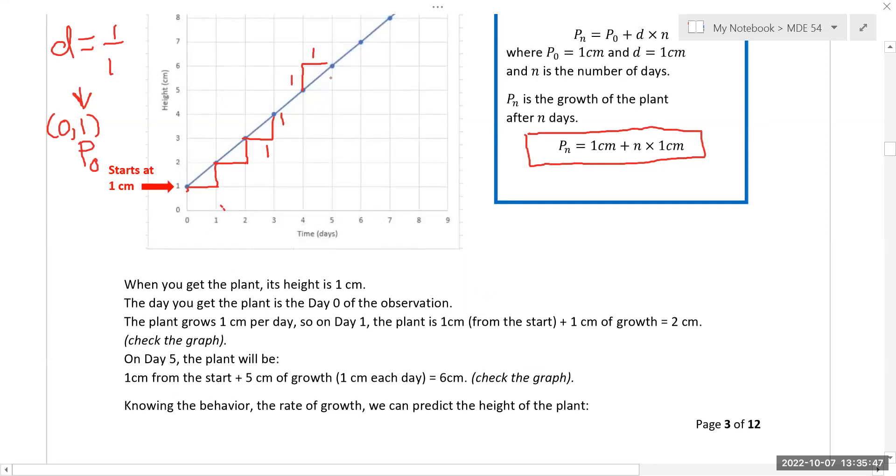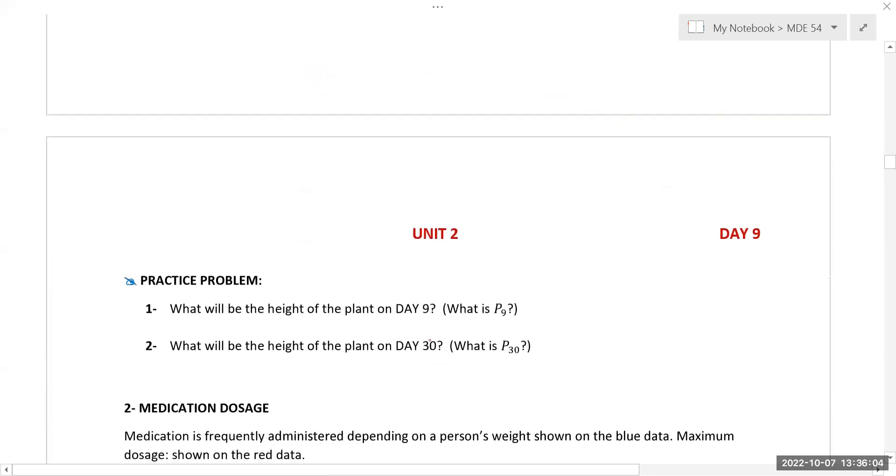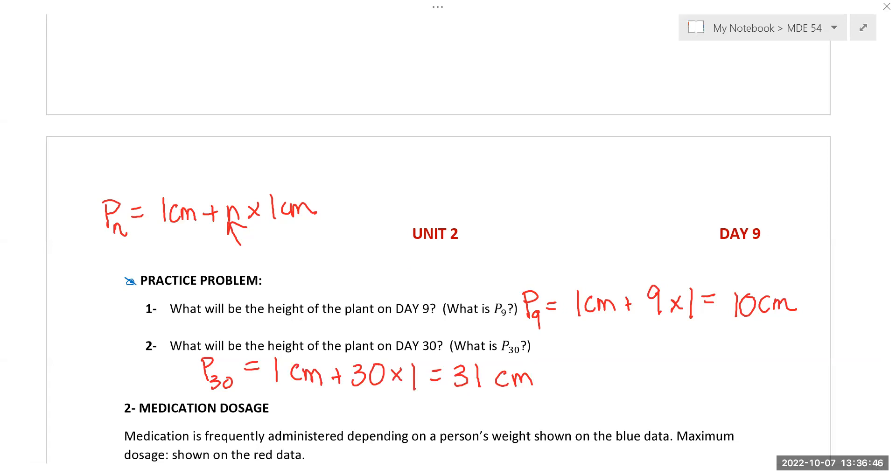If I wanted to figure out day 5, I can look at the chart. On day 5, I have the point (5, 6), so it's 6 centimeters. But I could also put it in here and get 1 plus 5 times 1, which is also 6. Now I can predict the height of the plant. For day 9, P_9 would be 1 centimeter plus 9 times 1, or 10 centimeters. P_30 would be 1 centimeter plus 30 times 1, which is 31 centimeters.